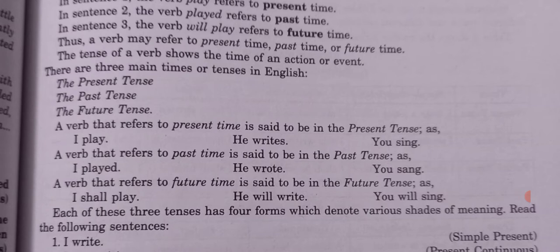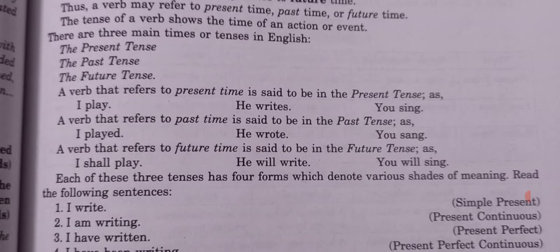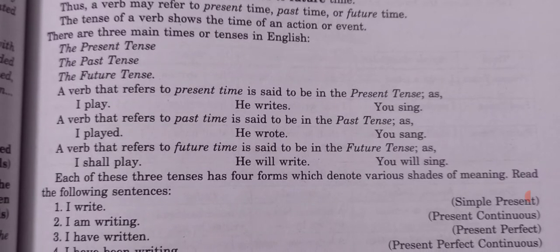For the future tense, a verb refers to future time. Examples: I shall play, he will play, you will sing — these are the examples of future tense.